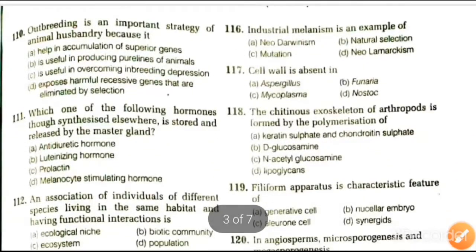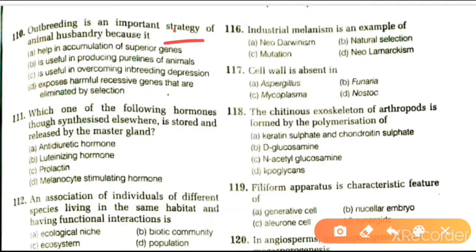Next question: out-breeding is an important strategy of animal husbandry because it helps in accumulation of superior genes, is useful in producing pure lines, is useful in overcoming inbreeding depression, or exposes harmful recessive genes that are eliminated by selection. The answer is that it is useful in overcoming inbreeding depression.